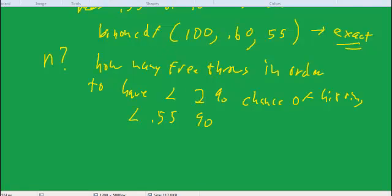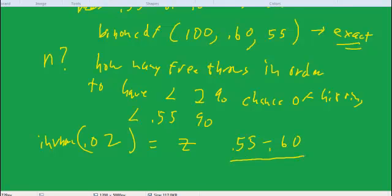That is, let's see we want less than a 2% chance so we take 0.02 we could take invnorm of 0.02 and that'll give us our target for z and then we take 0.55 minus 0.60 over square root of 0.6 times 1 minus 0.6 over square root of N is equal to whatever that target z is and now we're solving for one variable the square root of N and we can solve it.